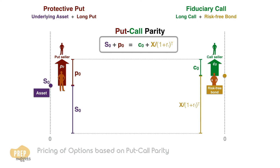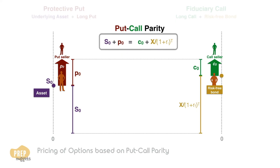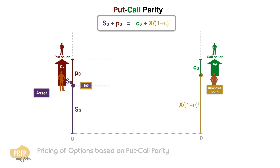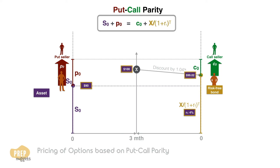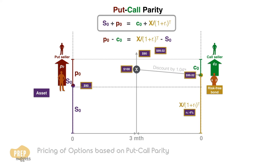So how can the put-call parity be used for pricing options? Let's illustrate with a simple example. At time zero, an underlying asset is traded at $90. Assume that the underlying has a call and a put option with an exercise price of $100. The risk-free rate is 4% and the options expire in three months, so t is one quarter. Discounting the exercise price by 4% for one quarter, we get a present value of $99.02 — this is the value of the risk-free bond that the investor has to buy at initiation. Rearranging the put-call parity formula so that all the options are on one side, we find that the difference between the put price and the call price must be $9.02.